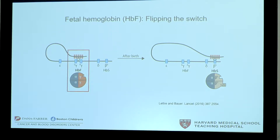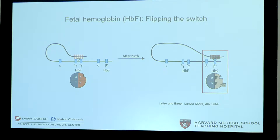However, after birth, a natural switch occurs, shifting expression from gamma globin to beta globin. This is where problems begin for sickle cell patients, because the mutation that causes sickle cell disease is located in the beta globin gene. Instead of making normal adult beta globin, these patients make hemoglobin S or sickle hemoglobin, which causes all of the downstream complications in sickle cell disease.